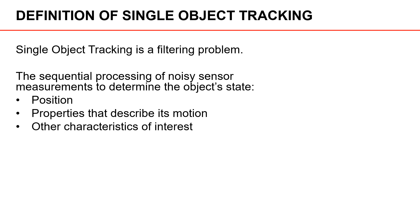Before we define multiple object tracking, let's have a look at tracking a single object. Single object tracking is an example of a filtering problem. What we are dealing with is the sequential processing of noisy sensor measurements to determine the object state. By the object state, we mean the object's position together with properties that describe its motion — for example, its speed and the direction it is heading. Additionally, we can also include parameters that describe other characteristics of interest, such as the shape of the object or its size.